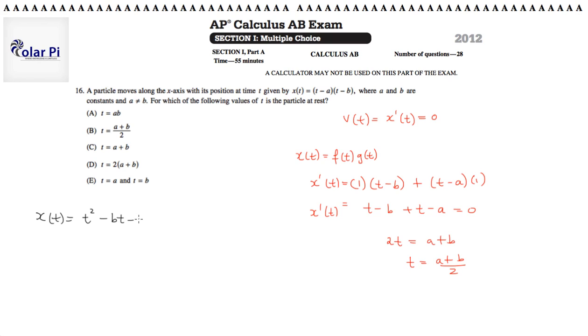So minus bt, because it's really the distributive property, minus a t, and then plus a b. So this is the position function. So x prime of t, which is the velocity function, is going to equal 2t.